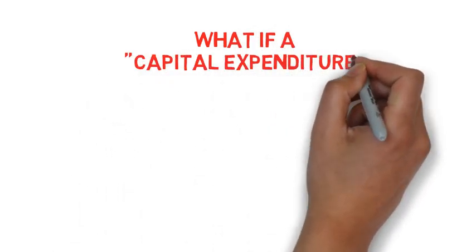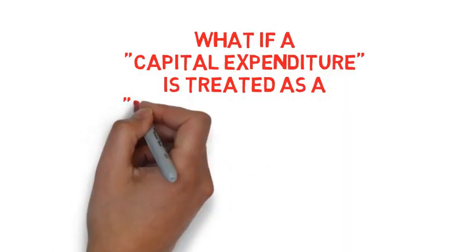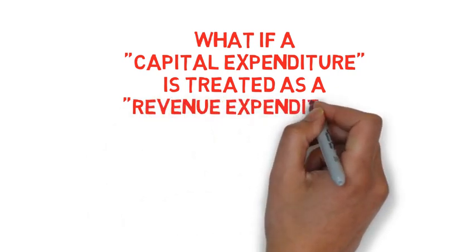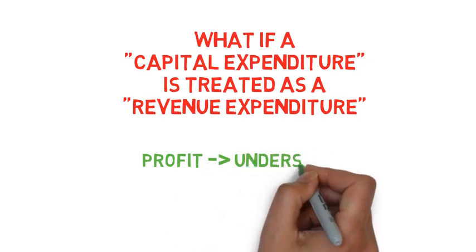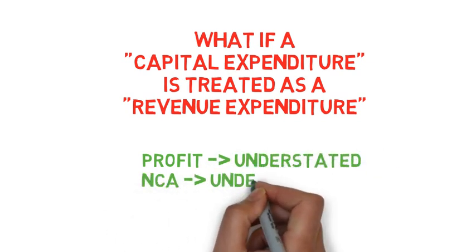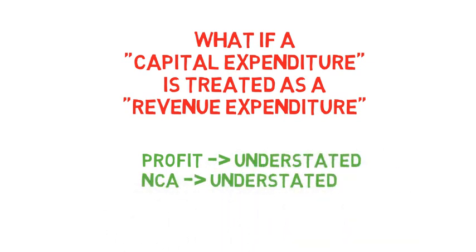What happens if a capital expenditure has been incorrectly classified as a revenue expenditure? For example, if we bought a new motor vehicle which should have been recorded as a non-current asset but was instead charged as a motor expense — we have overstated our expenses, which leads to an understatement of profits, and the motor vehicle is also not recorded in the accounts, so the non-current asset will also be understated.